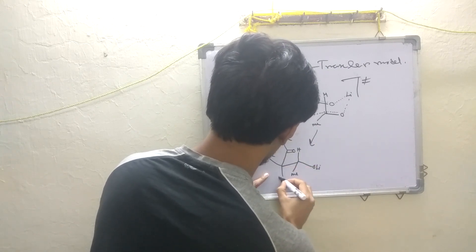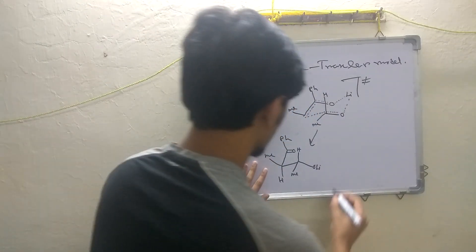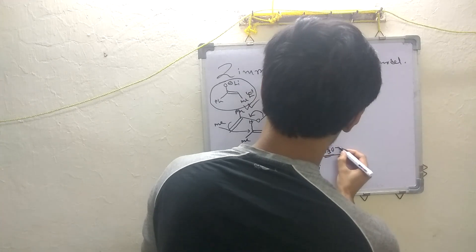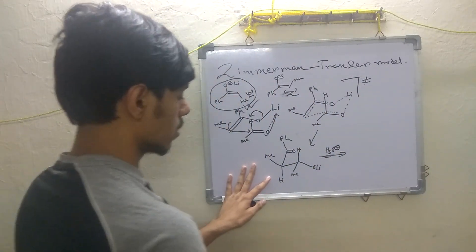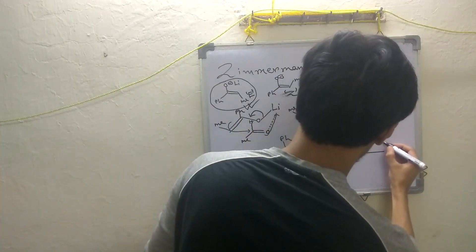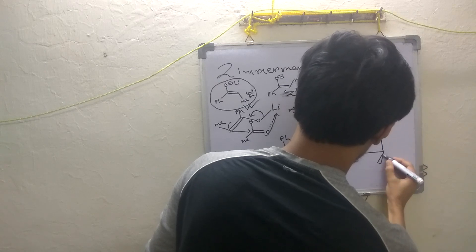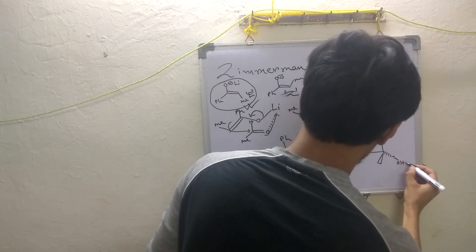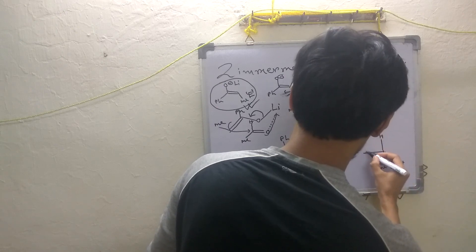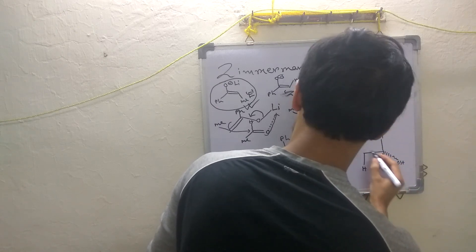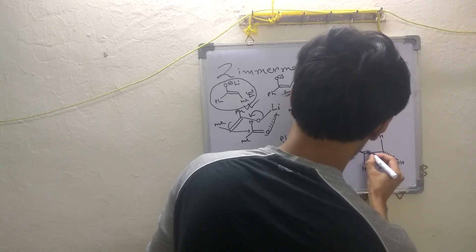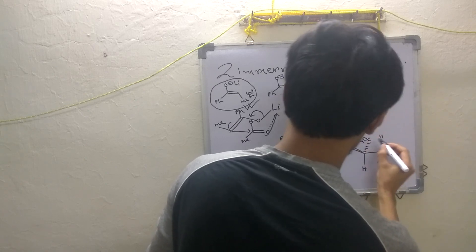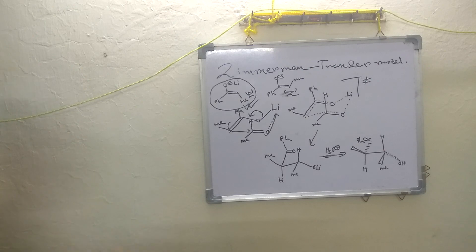After drawing the transition state and performing acidic workup, we get the product: it has an OH group, a methyl, a hydrogen, another methyl, and a COOH group. This is the product of the diastereoselective aldol condensation using the E-enolate.